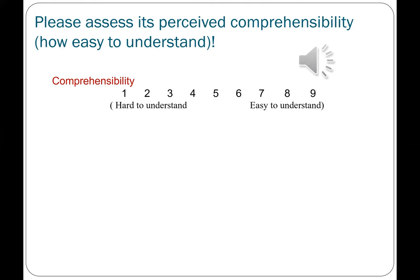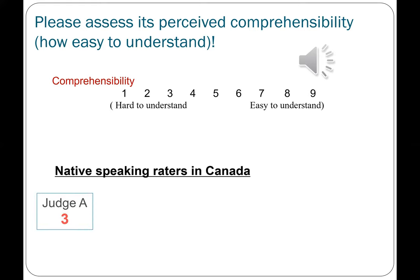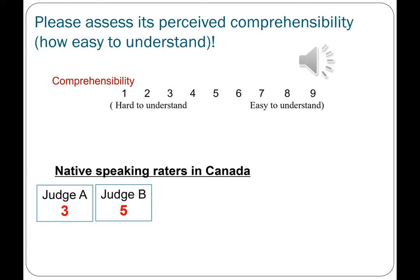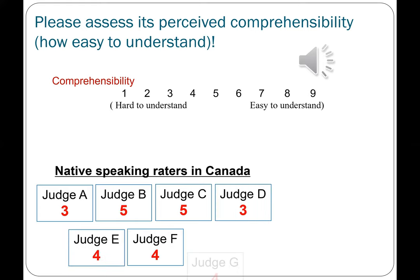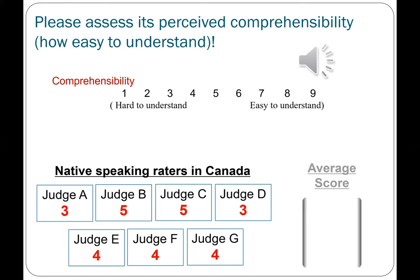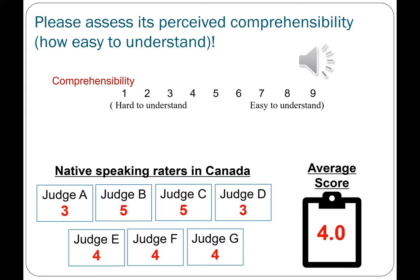So what did you think? Let me share with you the results of the seven judges that I recruited back in Canada — all of them native speakers of English. Judge A: three. Judge B: five. Judge C: four. Judge D: three. Then four, four, four. Therefore, the average score was 4.0.